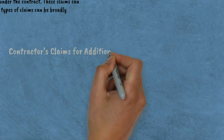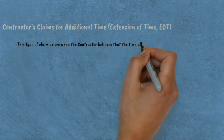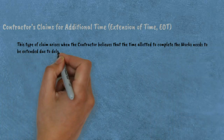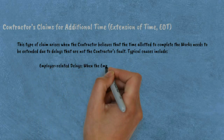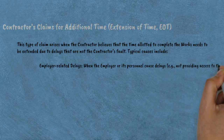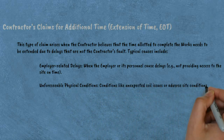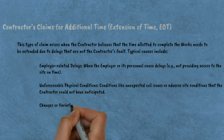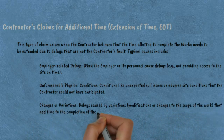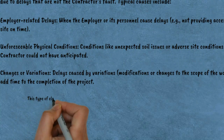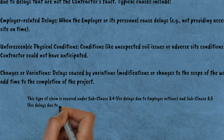First, contractor's claims for additional time — Extension of Time (EOT). This type of claim arises when the contractor believes that the time allotted to complete the works needs to be extended due to delays that are not the contractor's fault. Typical causes include: employer-related delays, where the employer or its personnel caused delays such as not providing access to the site on time; unforeseeable physical conditions like unexpected soil issues or adverse site conditions; and changes or variations — delays caused by modifications or changes to the scope of work. These claims are covered under Sub-clause 8.4 for delays due to employer actions, and Sub-clause 8.5 for delays due to unforeseen circumstances.